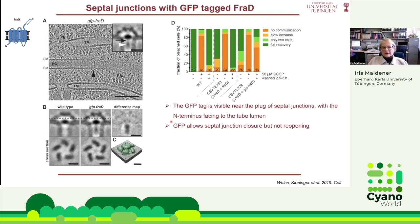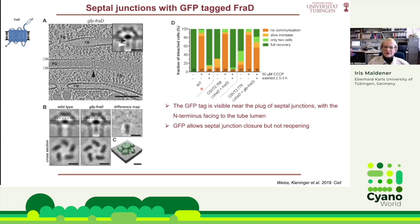We tried to see FRAD in the septal junctions by fusing GFP to FRAD. FRAD is a predicted membrane-bound protein with an N-terminus facing the cytoplasmic side. When we gave this construct to Gregor for tomography, he could clearly see a difference in the plug region, and the difference map — wild type minus mutant — showed clearly an extra density corresponding to the GFP tag. This tag also influenced the gating ability of the septal junctions: when FRAD was fused to GFP, gating was possible but reopening was not. This was another indication that FRAD is part of the septal junction, likely sitting at or near the plug.